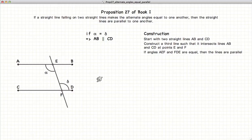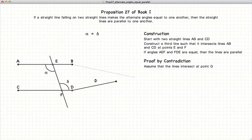We're going to demonstrate this again by using contradictions. So, let's assume that the lines AB and CD do meet somewhere far down the line at point G. So, we're pretending that this is actually a straight line. So, we have a triangle E, G, F, with an interior angle of delta and an exterior angle of alpha.